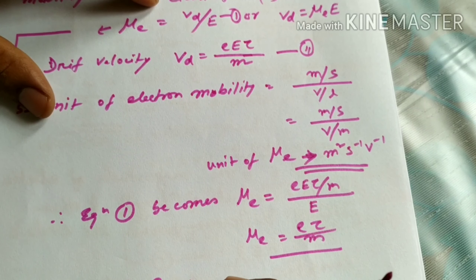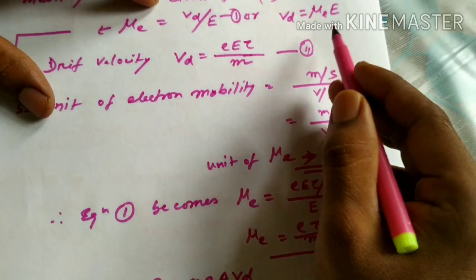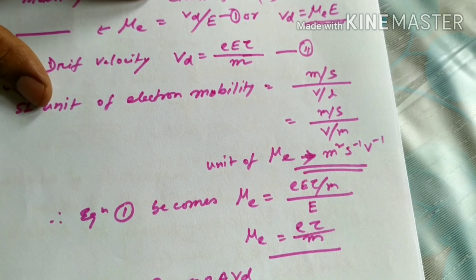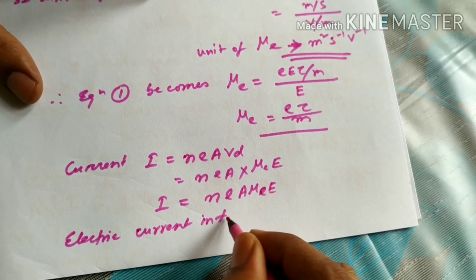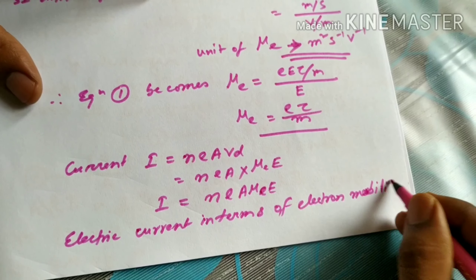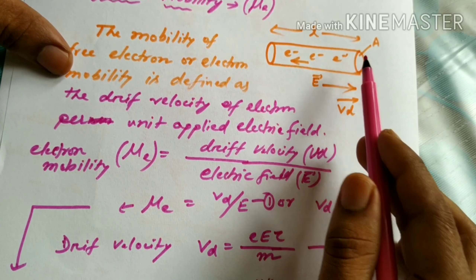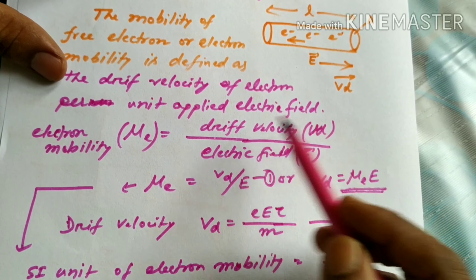We already know current in terms of electron mobility. Current I equals neAVd. Substituting the drift velocity expression, Vd equals mu of E times E, we get I equals neA times mu of E times E. This is the electric current expressed in terms of electron mobility.